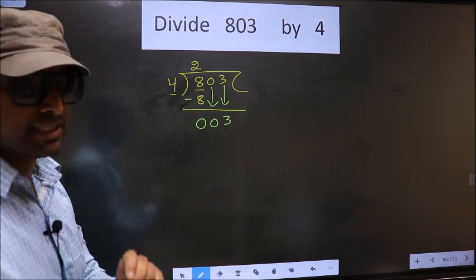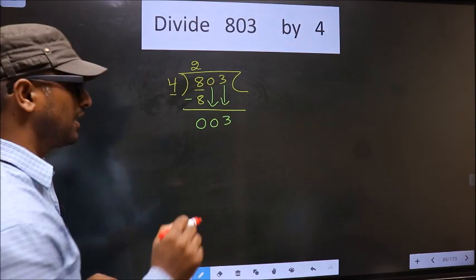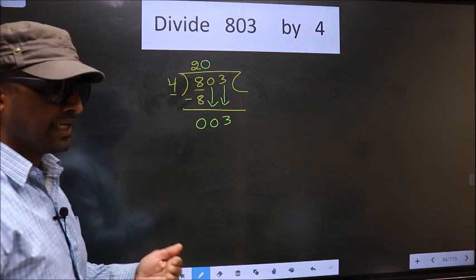Now remember this: whenever you are bringing down two numbers, compulsory you should put 0 in the quotient. I repeat, whenever you are bringing down two numbers, compulsory you should put 0 in the quotient.